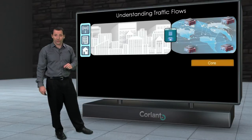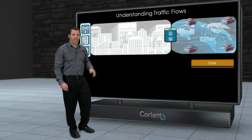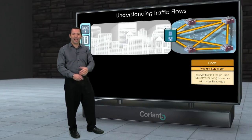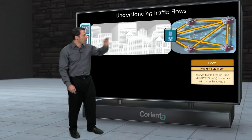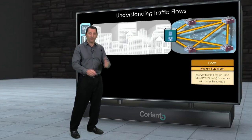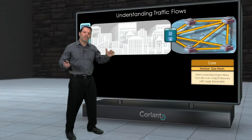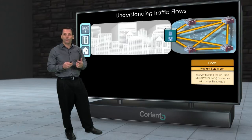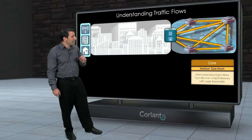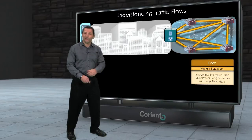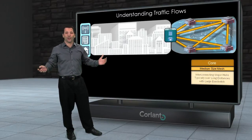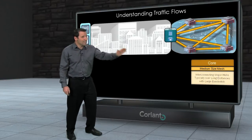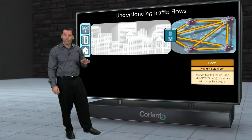Let's look at core networks first. Core networks interconnect these major metropolitan areas with one another, these big hub locations. What you have is a very mesh-type traffic pattern — each one of these hub locations really needs to talk to every one of the other hub locations. And because it's aggregating all the traffic from that metropolitan area, you're generally dealing with large amounts of bandwidth. Because you're connecting these large cities from one another, these networks often span very large distances — continental networks, entire nationwide networks — thousands of kilometers in many instances between locations.